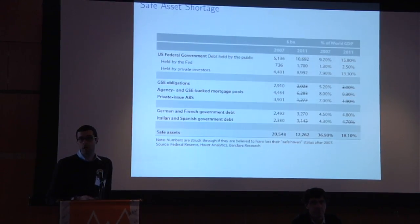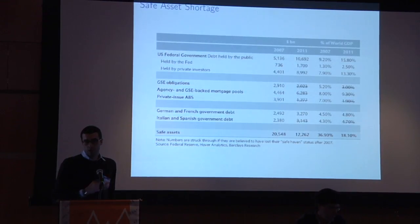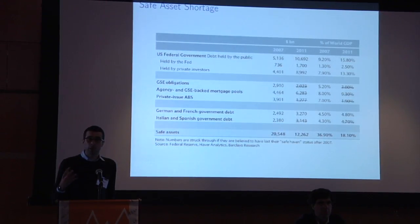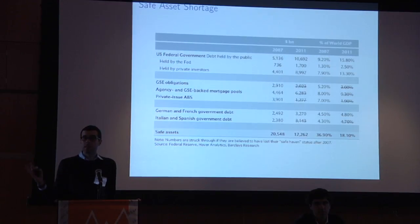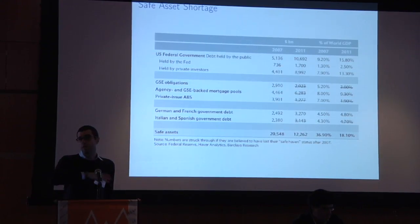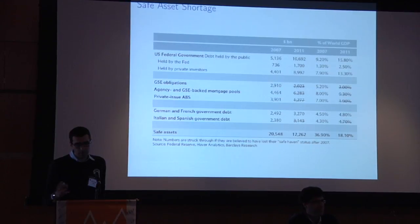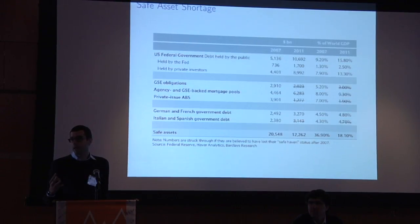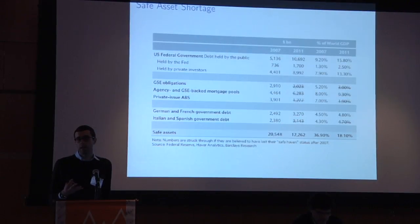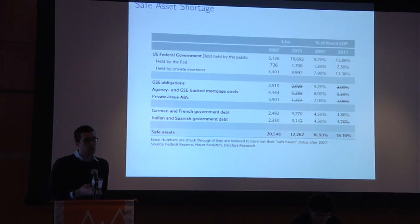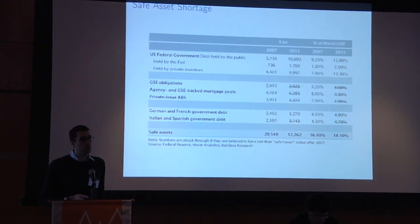So it's a huge contraction — a halving of the supply of safe assets. The big contributors behind that are: first, assets backed by residential land in the U.S. that were deemed safe in 2007 but no longer perceived to be safe in 2011; and second, periphery sovereign debt in Europe, considered safe in 2007 but no longer safe in 2011.